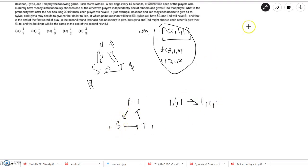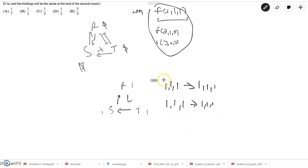If S gives her one dollar to R, R gives his one dollar to T, and T gives his one dollar to S, you can also go 1, 1, 1 to 1, 1, 1. And in fact, these are the only two ways that if you start with 1, 1, 1, to go back to 1, 1, 1.